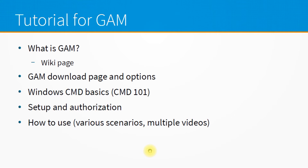So let's talk about the first two points now. Basically, GAM is a third-party tool that is developed and created using Python. It's an open source tool so you can find it on GitHub, download it, and get the source code as well. It's a command line tool and the job of this tool is to make you more efficient and confident in working with your G Suite admin console. It will give you a lot of functionality and access and control over things that are not found by default in the admin console.